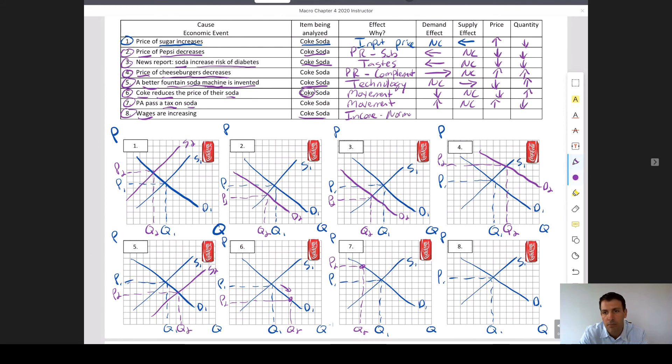Alright, the last one, wages are going up. You could argue normal good or inferior good. It's probably a little bit of both, but if wages are going up I would generally say that people may buy more soda. I don't know what they would trade up for. There's not a lot of other items besides soda that would be better. So I would say if the economy is doing well, income is going up, prices would go up and the demand curve would shift to the right there.